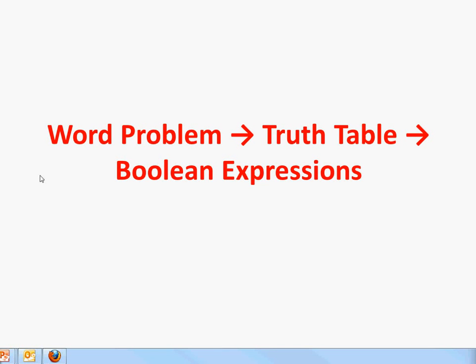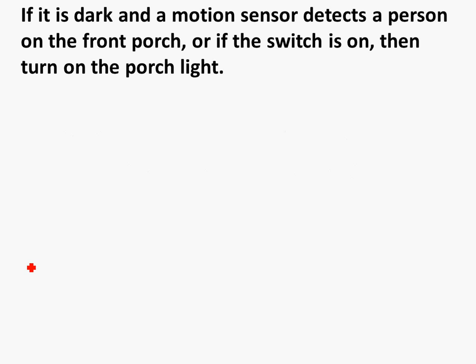In this video, we're going to look at how to take a regular word problem, create a truth table, and extract a boolean expression from that truth table. So let's take a look at a simple word problem. Say this is the logic we're trying to solve: if it is dark, an emotion sensor detects a person on the front porch, or if the switch is on, then turn on the porch light. This is a kind of logical problem we talk about in our daily lives.